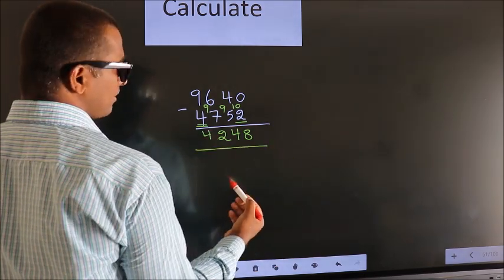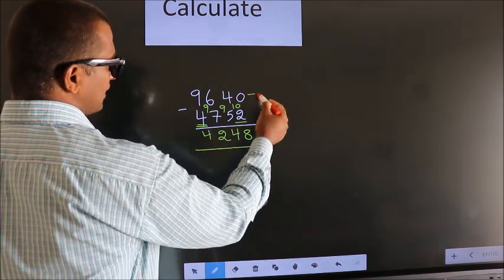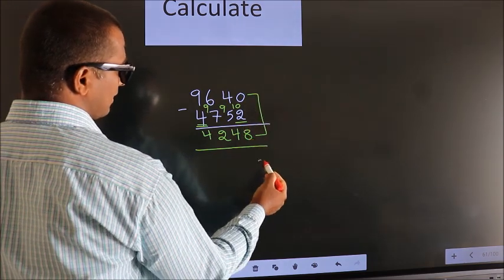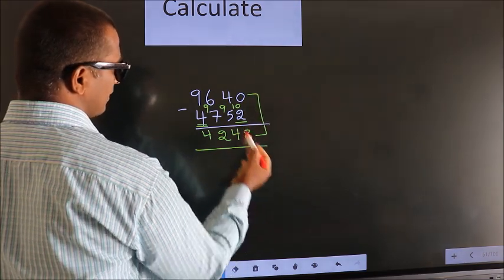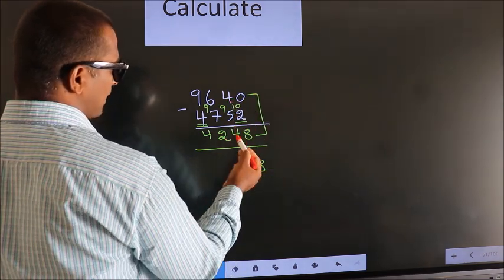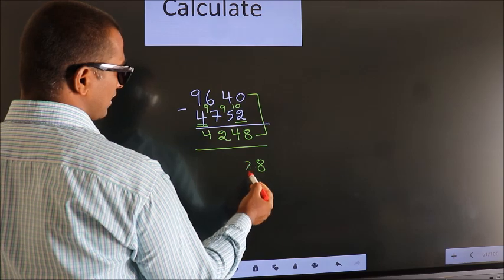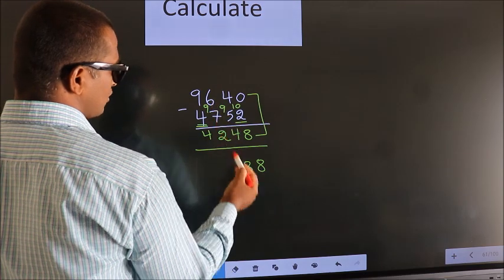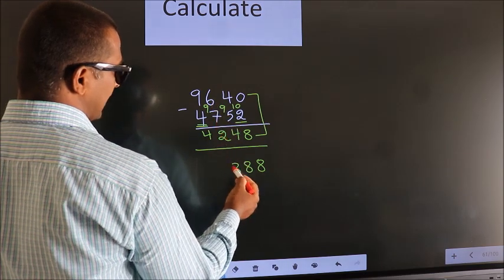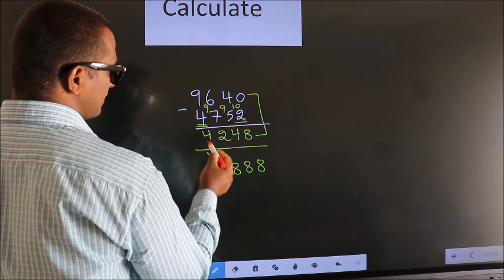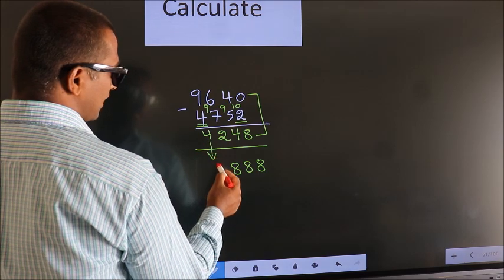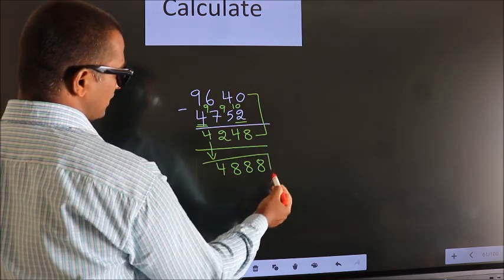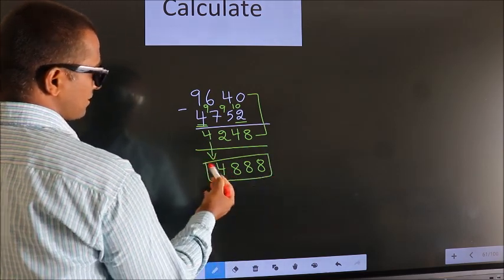Now add these two. 0 plus 8 is 8, 4 plus 4 is 8, 6 plus 2 is 8. The first digit we write as it is. So this is our answer.